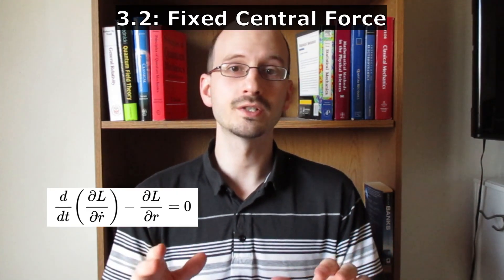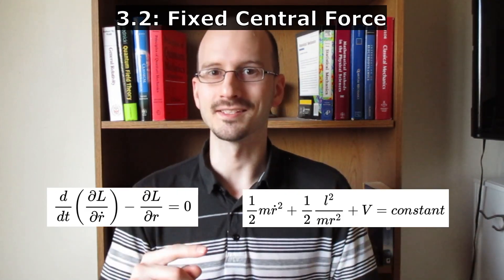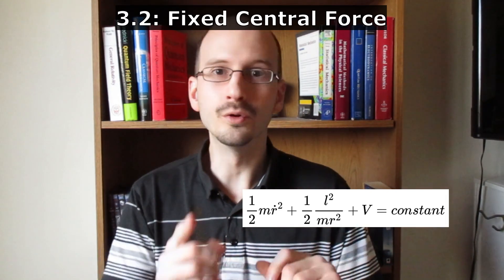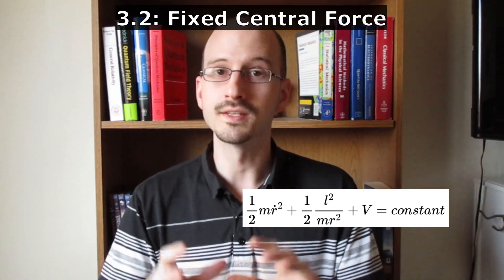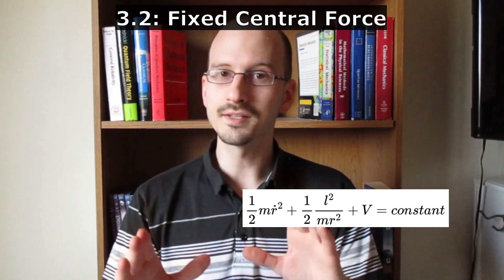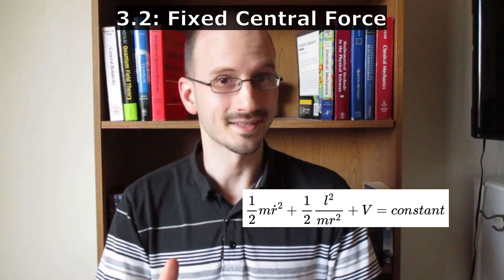If we do the Lagrange equation for r, we get this. Notice anything about that? There's no theta, nor is there any theta dot. This equation only has r and angular momentum. This is going to be important in the next section.